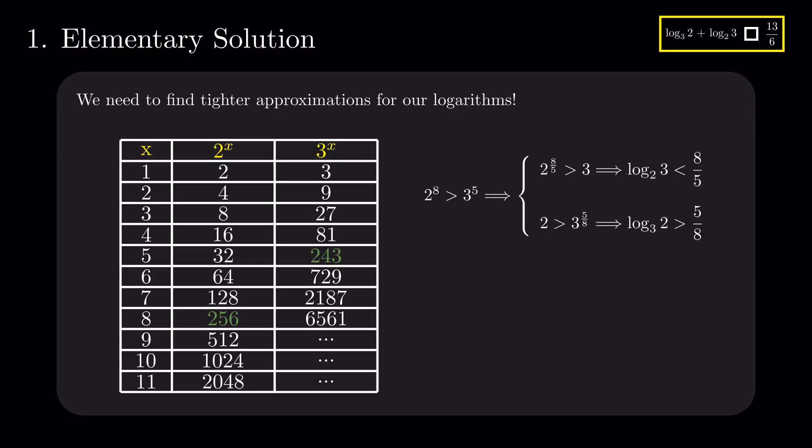To obtain the opposite approximations for the two logarithms, we need to find close powers of 2 and 3, with the one with base 3 being the bigger one. The next pair we can use is 2 to the power of 11 and 3 to the power of 7. Just as before, by getting the 7th and 11th roots of the inequality, we conclude that log base 2 of 3 is larger than 11 divided by 7 and log base 3 of 2 is smaller than 7 divided by 11.